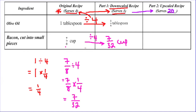So that's the downscaling. To do the upscaling, we need to figure out how much we need to serve 20 people. If I have a quarter tablespoon for one person and I need to serve 20, I need 20 times that amount. So we're going to multiply by 20.